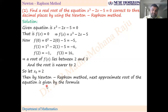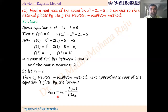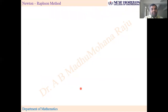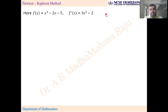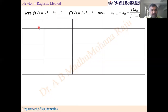With x₀ = 2, by Newton-Raphson method the next approximate root is given by the formula xₙ₊₁ = xₙ - f(xₙ)/f'(xₙ). We'll proceed in tabular form. List f(x) and f'(x). Since it is a polynomial, f'(x) = 3x² - 2. The table columns are: xₙ, f(xₙ), f'(xₙ), and xₙ₊₁.